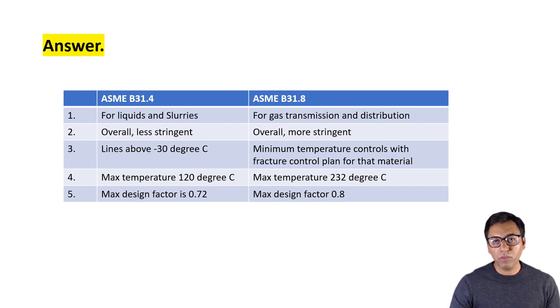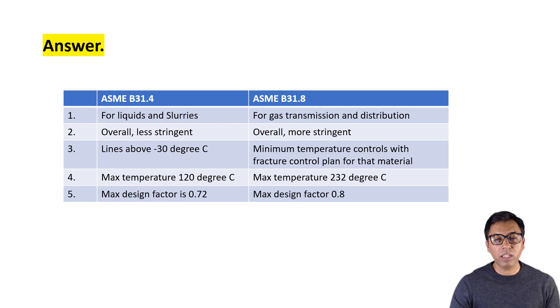The fourth point is maximum temperature. B31.4 can go up to 120 degrees Celsius, and B31.8 temperature can go up to 232 degrees Celsius.